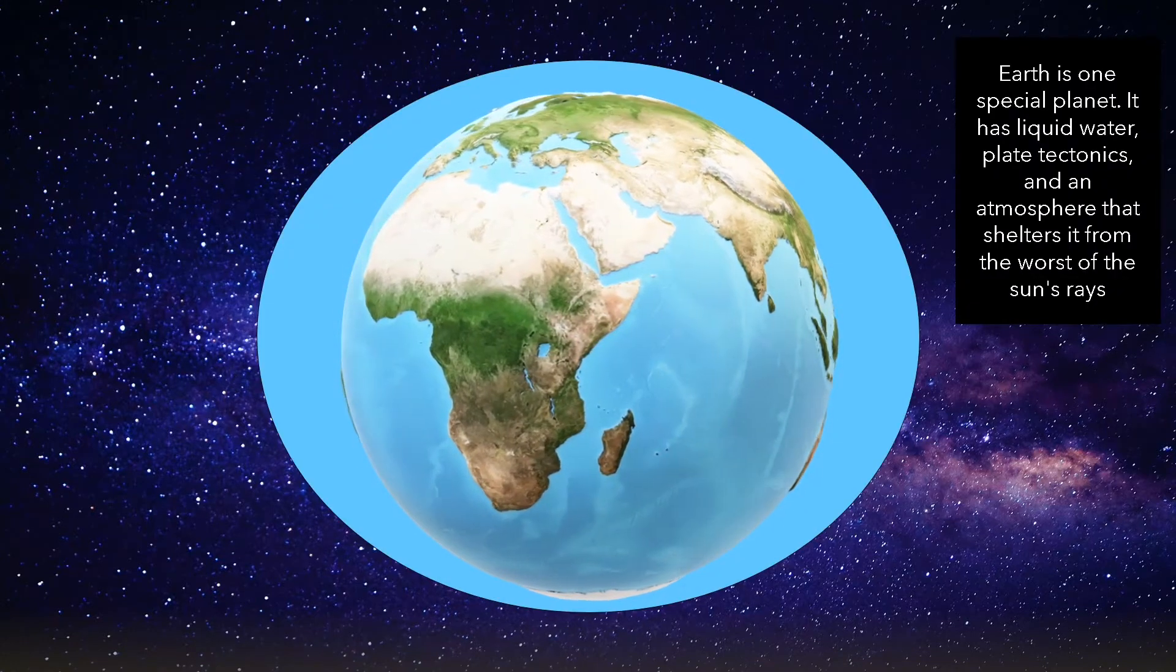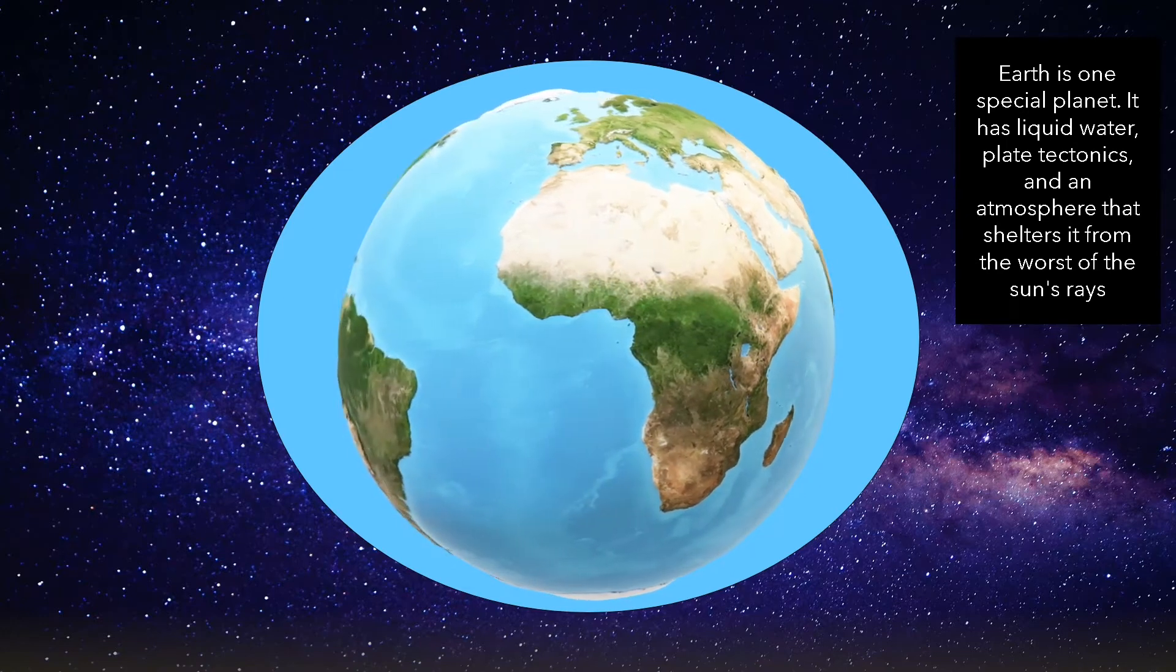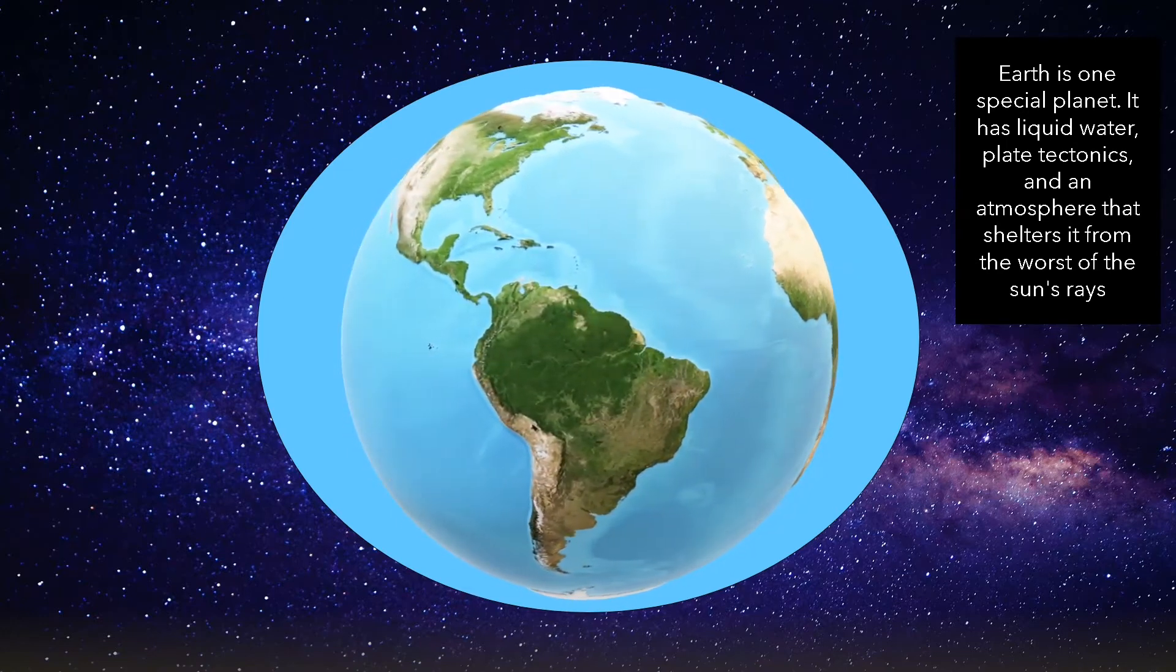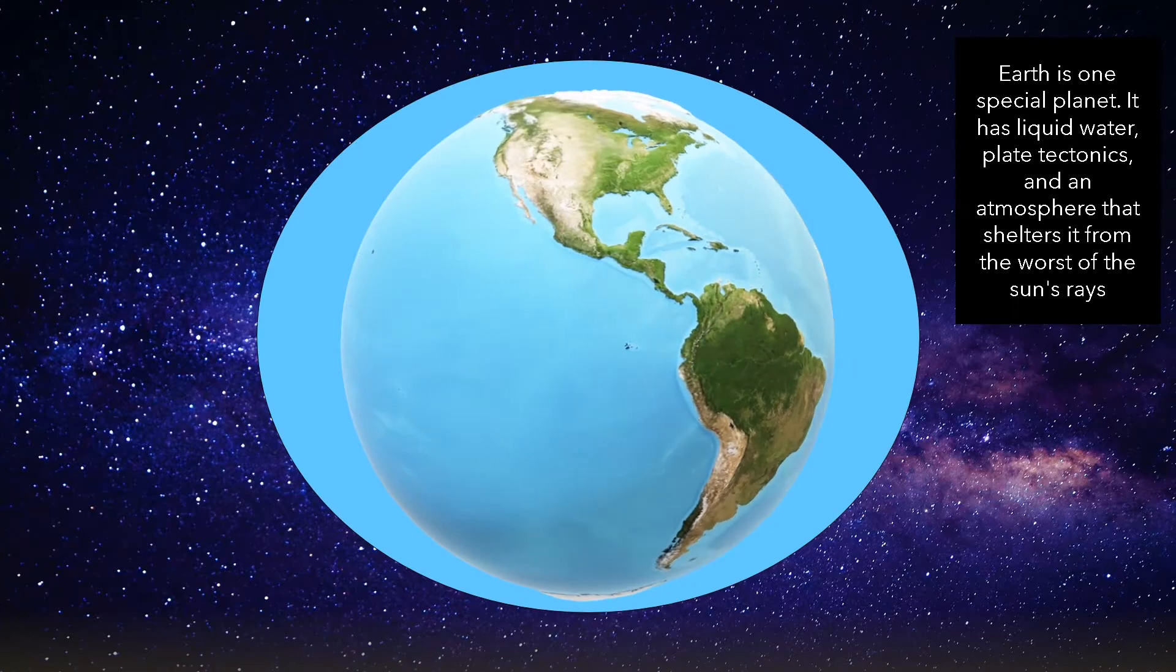Earth is one special planet. It has liquid water, plate tectonics and an atmosphere that shelters it from the worst of the sun rays.